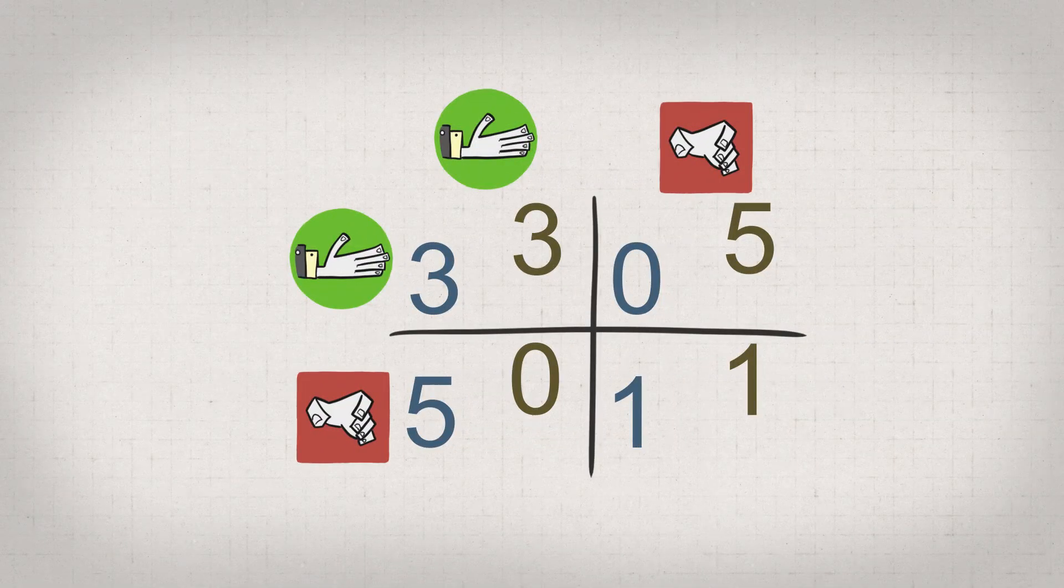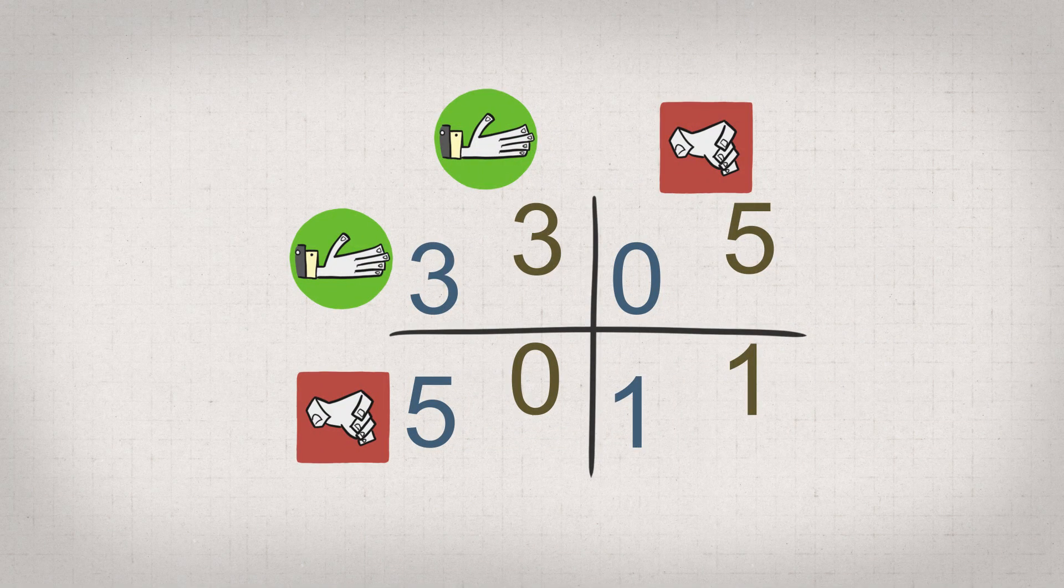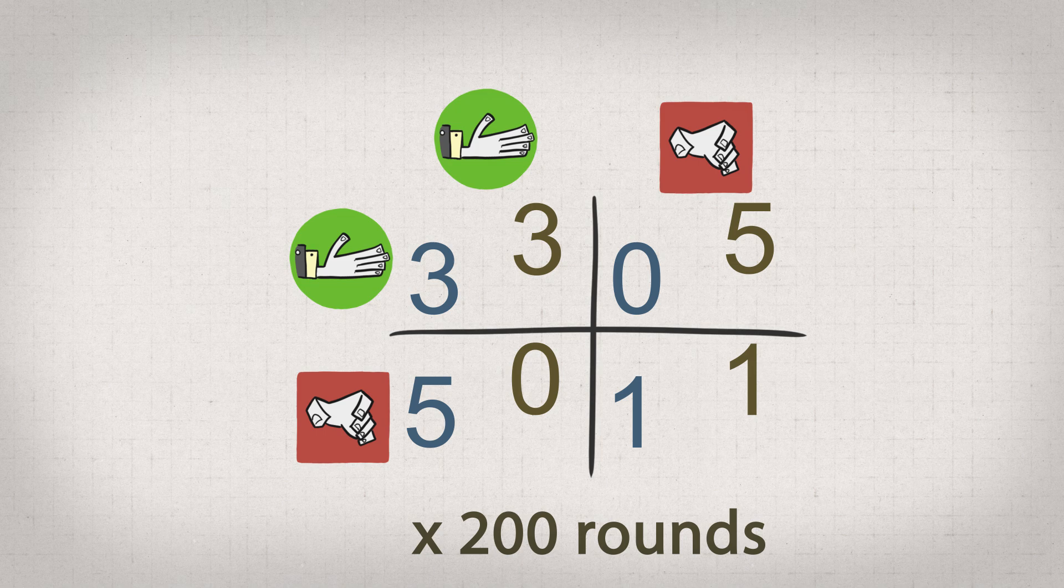What is? In 1980, Robert Axelrod held a tournament where anyone could submit a strategy. Each strategy did 200 rounds against each other's strategy. There were 14 strategies submitted plus the strategy 50-50 random.